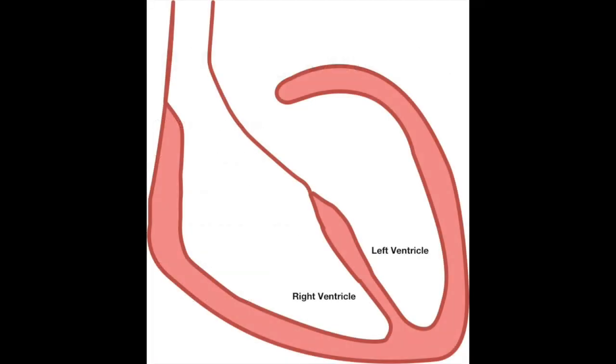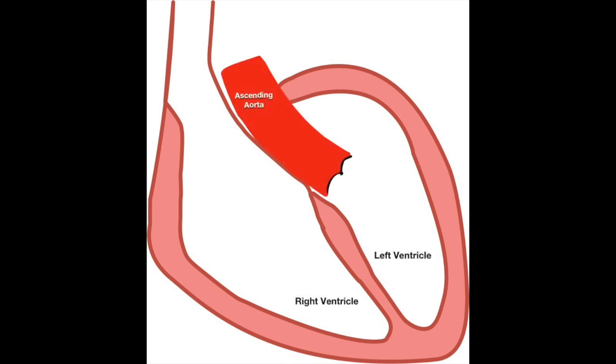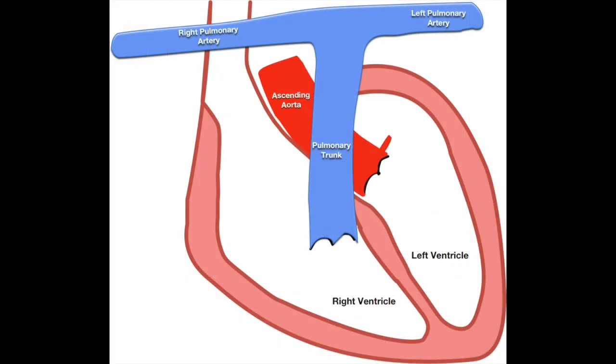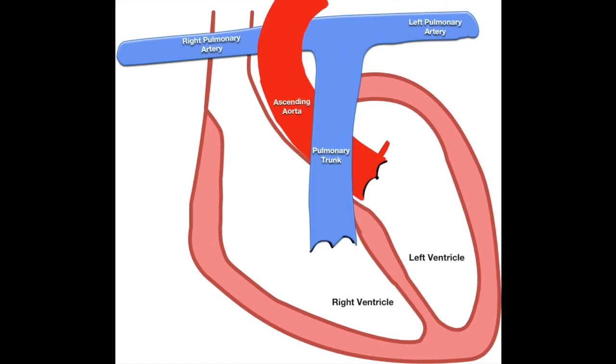The aorta is responsible for supplying oxygenated blood from the left ventricle to the rest of the body. In the first part, the ascending aorta starts immediately distal to the aortic valve and provides the paired coronary arteries very early in its course. The aorta initially ascends posterior to the pulmonary trunk but passes anterior to the right pulmonary artery as it ascends further within the mediastinum.